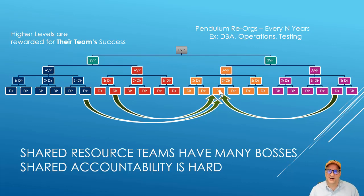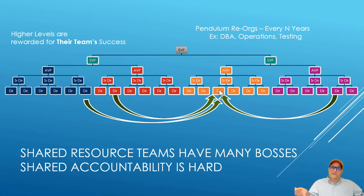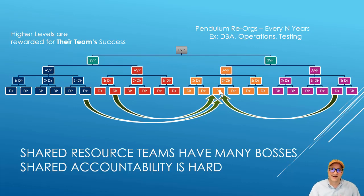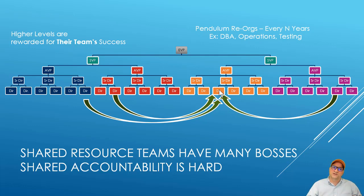What you see is pendulum reorgs - we see this all the time in the database space. DBAs get a database group, a center of excellence, where you pull everybody together. After a while that team doesn't seem as responsive as expected, or people are blaming it for their failures - so then you reorg. Five years later you realize the distributed model didn't work because you lost all your synergy and standards, and you have to bring it back. You see this in DBA, operations, and testing. One of the reasons DevOps happened is it's another attempt to push responsibility out closer to the team, so you don't have this cross-VP, cross-senior-director accountability problem.